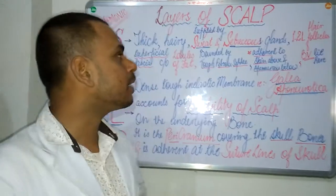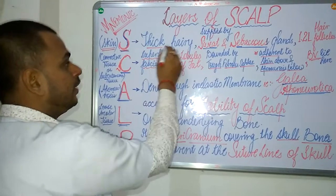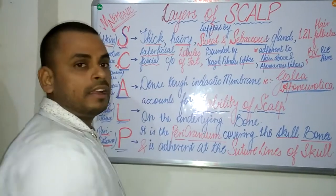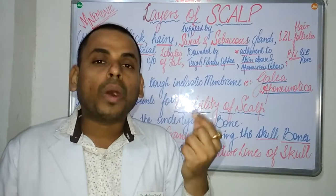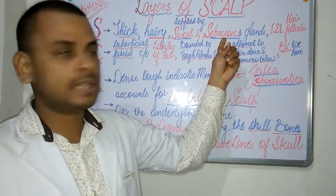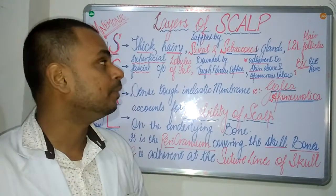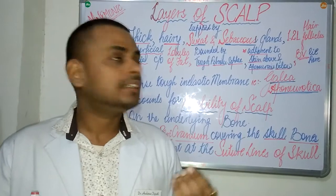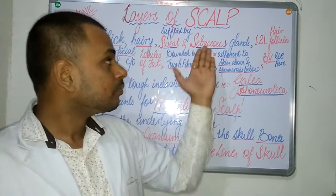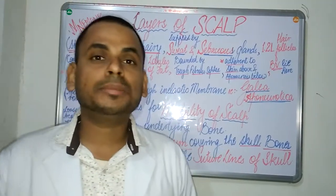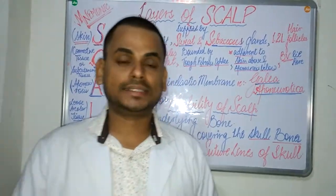The characteristics of the skin of the scalp are that it is thick and hairy, and it is richly supplied with sweat glands and sebaceous glands. The sebaceous glands are responsible for the oily texture of the scalp, and the sweat glands produce sweat. The skin of the scalp contains approximately 1.2 lakh hair follicles.